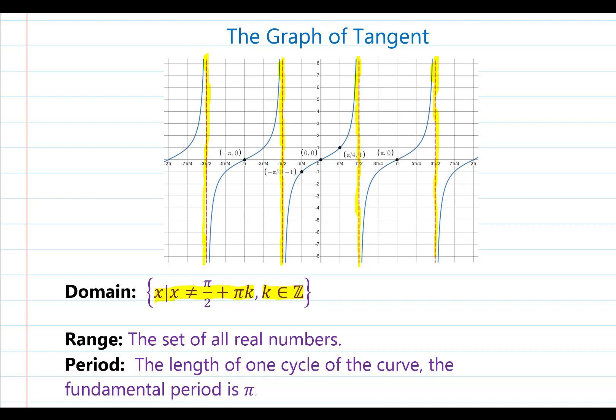The period is the length of one cycle of the curve. In this case, the fundamental period is going to be pi units. We see this as the completion of one curve occurring with a horizontal distance of pi units. We also see this is the distance between the vertical asymptotes.